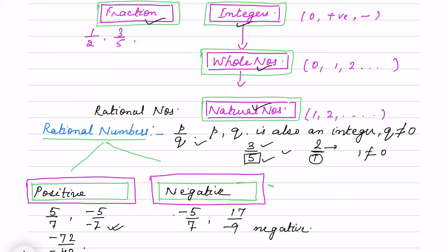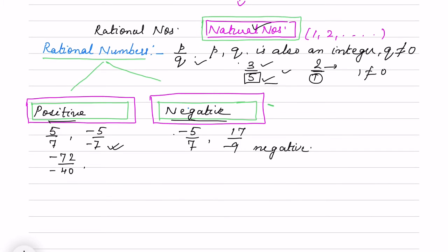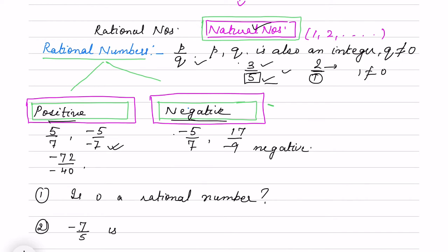So what we have done: rational number is in the form of P by Q where Q is not equal to 0, and we have two types — positive and negative. My first question is: is 0 a rational number? Think about how you can represent 0. Second question: is minus 7 by 5 a positive rational number or a negative rational number?